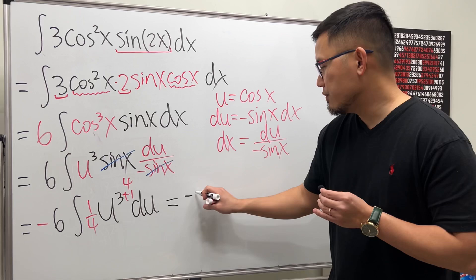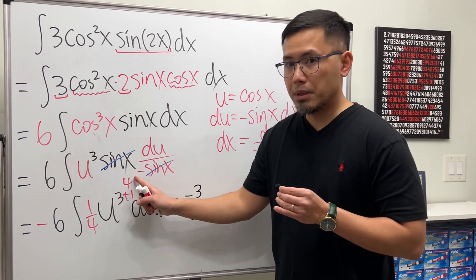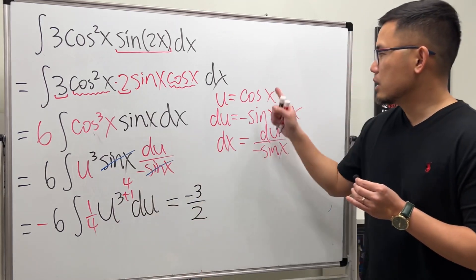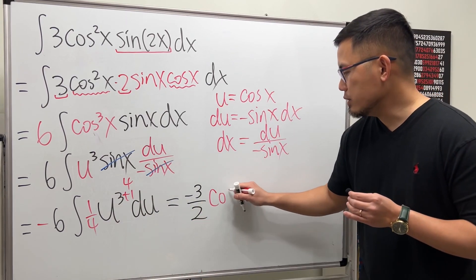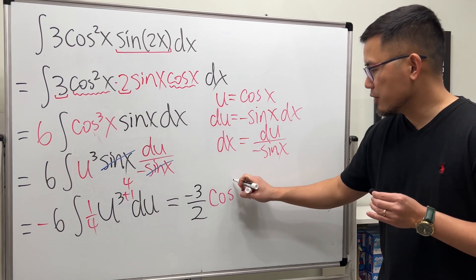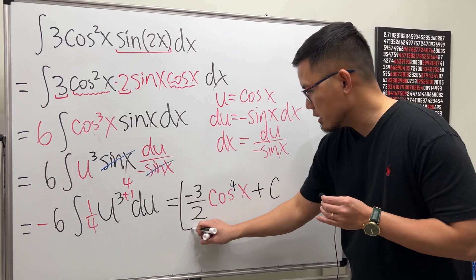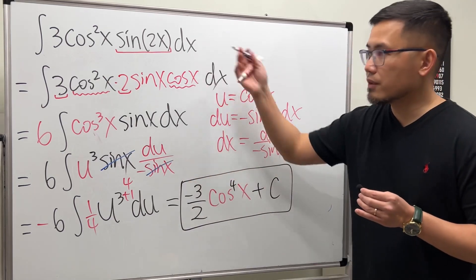So finally, negative six divided by four, reduce that, we get negative three over two. And then we have u to the fourth power. u is cosine x, so we have cosine x, and then to the fourth power. Let's put the fourth power right here, and that is it. So this right here will be the answer for that.